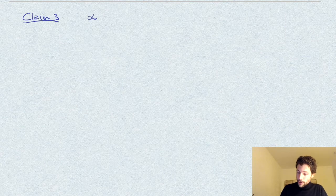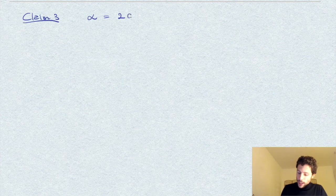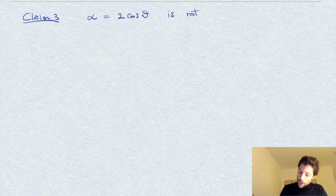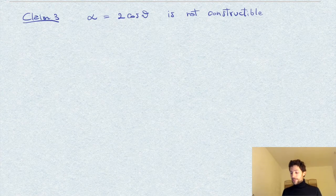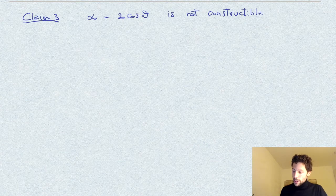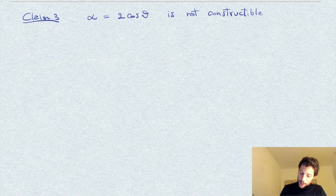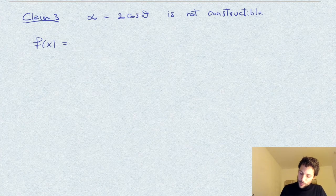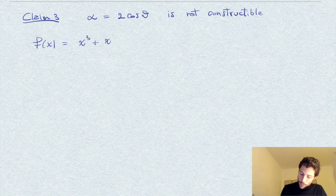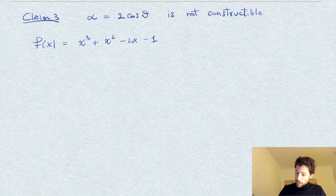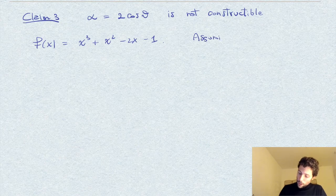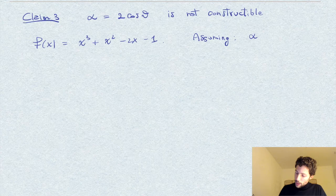Once we have these first two ingredients, these first two claims, we can proceed to the final step, which is to show that this alpha, this number twice cosine of theta, is not constructible in the sense of Galois theory, constructible numbers with straightedge and compass. How do we prove this? We have our polynomial f, this cubic, and we proceed by contradiction, by assuming the contrary, that alpha is constructible.